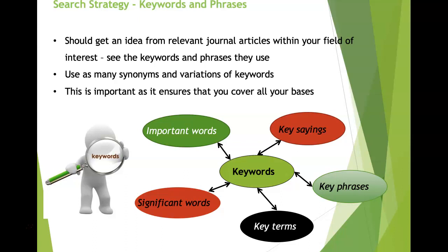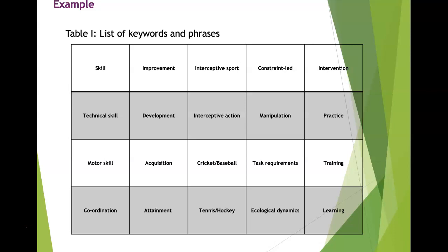For keywords and phrases, get ideas from relevant journal articles within your field and see what keywords and phrases they used. Use as many synonyms and variations as possible. For example, for the word 'skill' you might use technical skill, motor skill, or coordination. Likewise, use synonyms for improvement, interceptive sport, constraints-led, and intervention. Working in a team is important to ensure you cover all your bases.